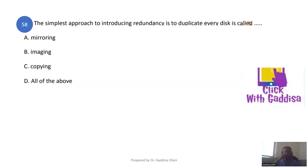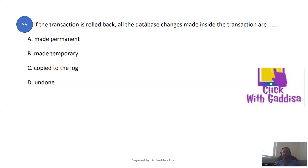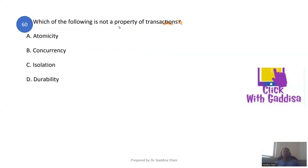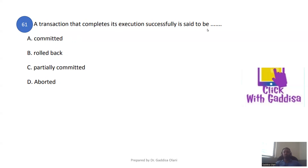If a transaction is rolled back, all the database changes made inside that transaction are rolled back. The properties of a transaction are: Atomicity, Consistency, Isolation, and Durability. Concurrency is not a transaction property.